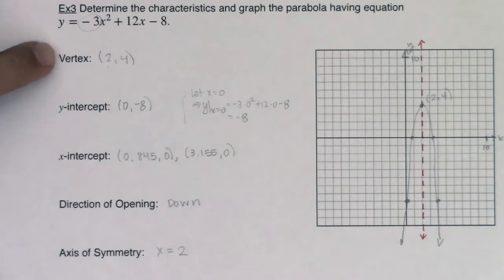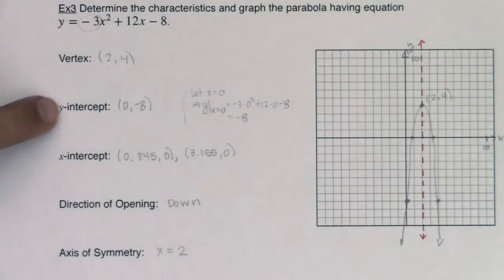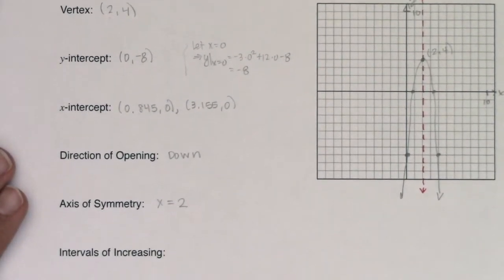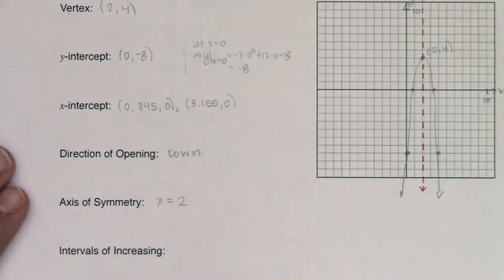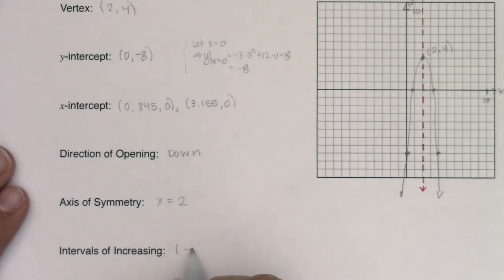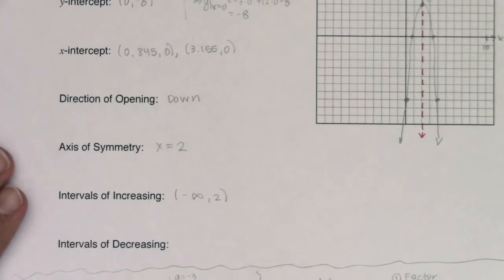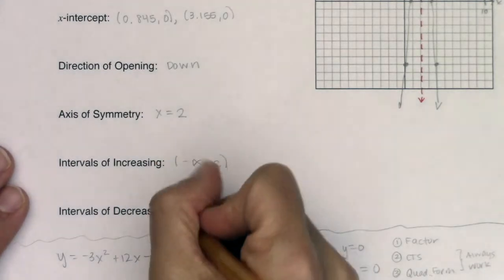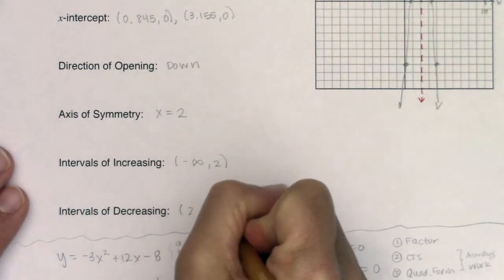Remember that x-intercepts, y-intercepts, and vertices are all ordered pairs. But when we get to intervals of increasing and decreasing, these are intervals — I only want the x-coordinate. My function is increasing from negative infinity to 2, and decreasing from positive 2 to infinity, always using parentheses and referencing the x-axis.